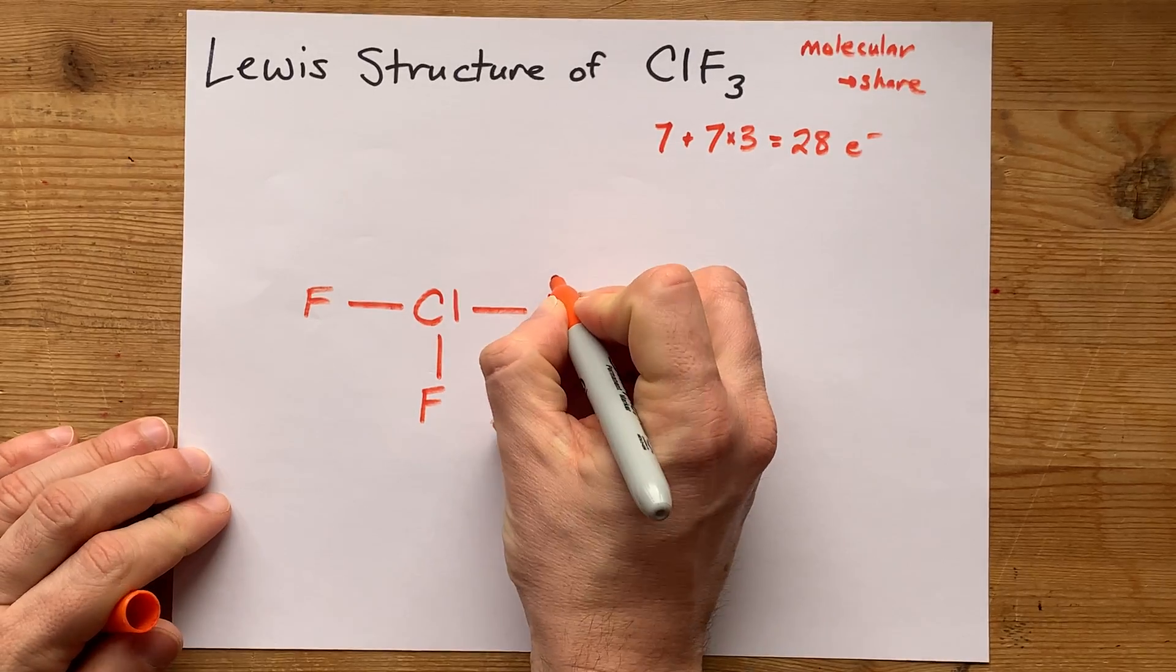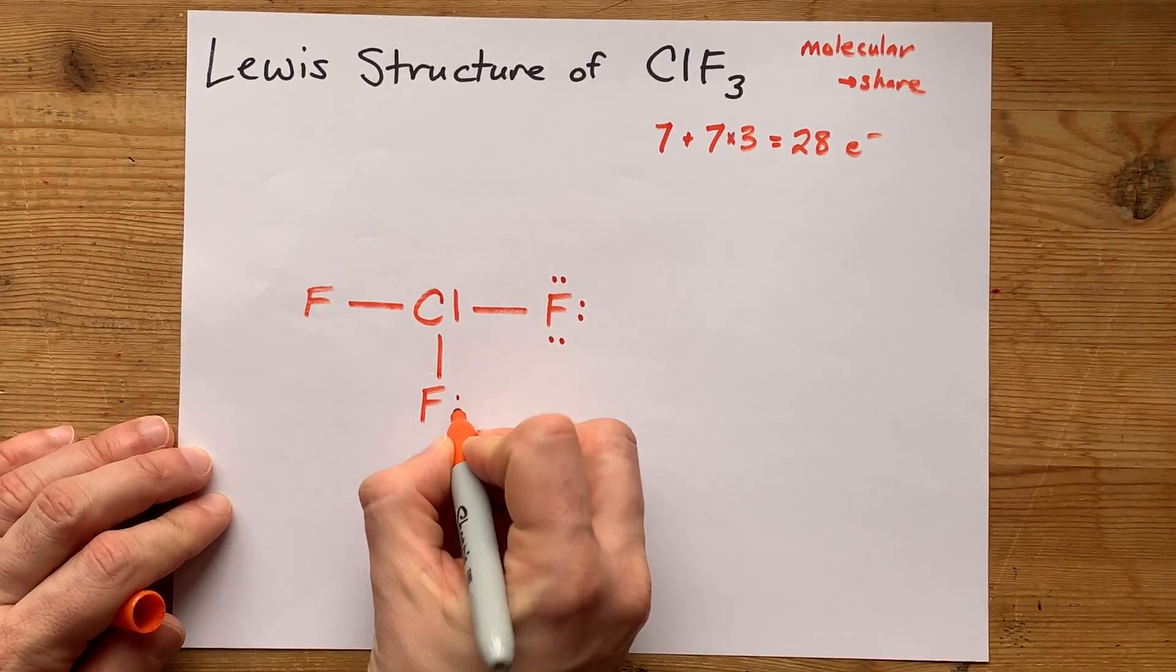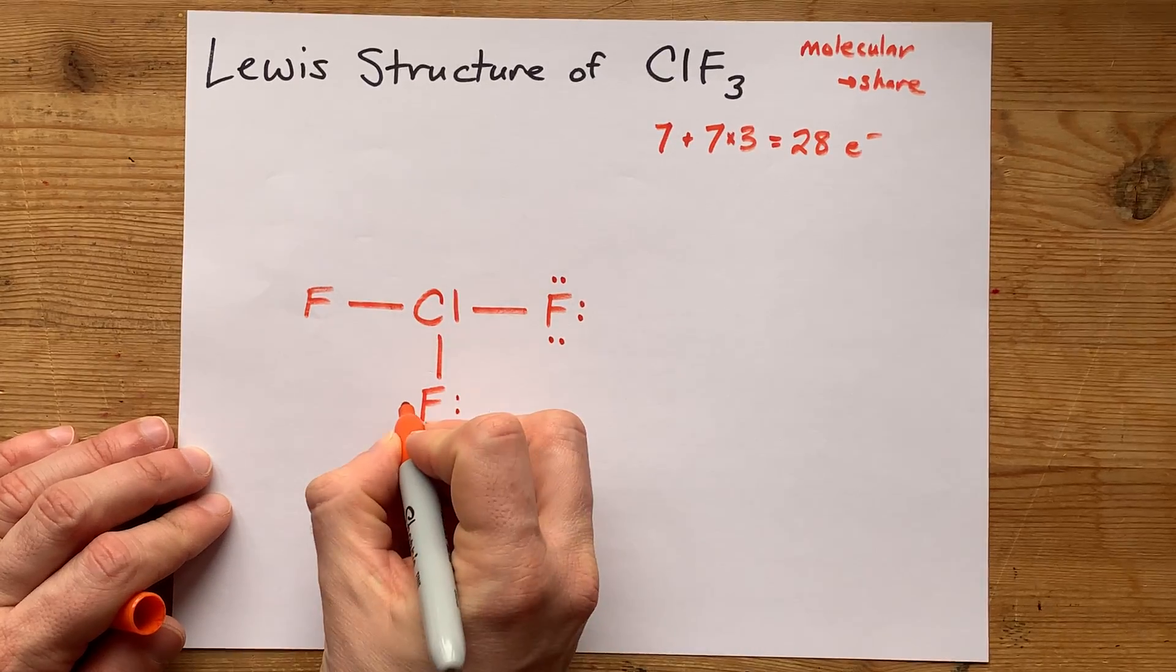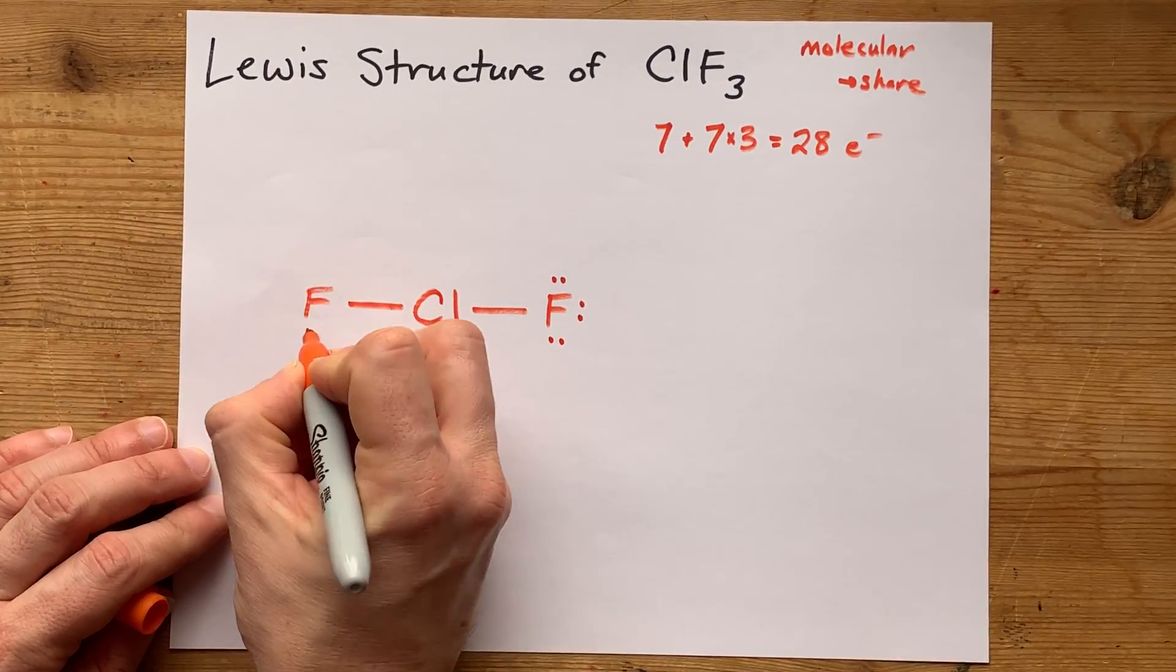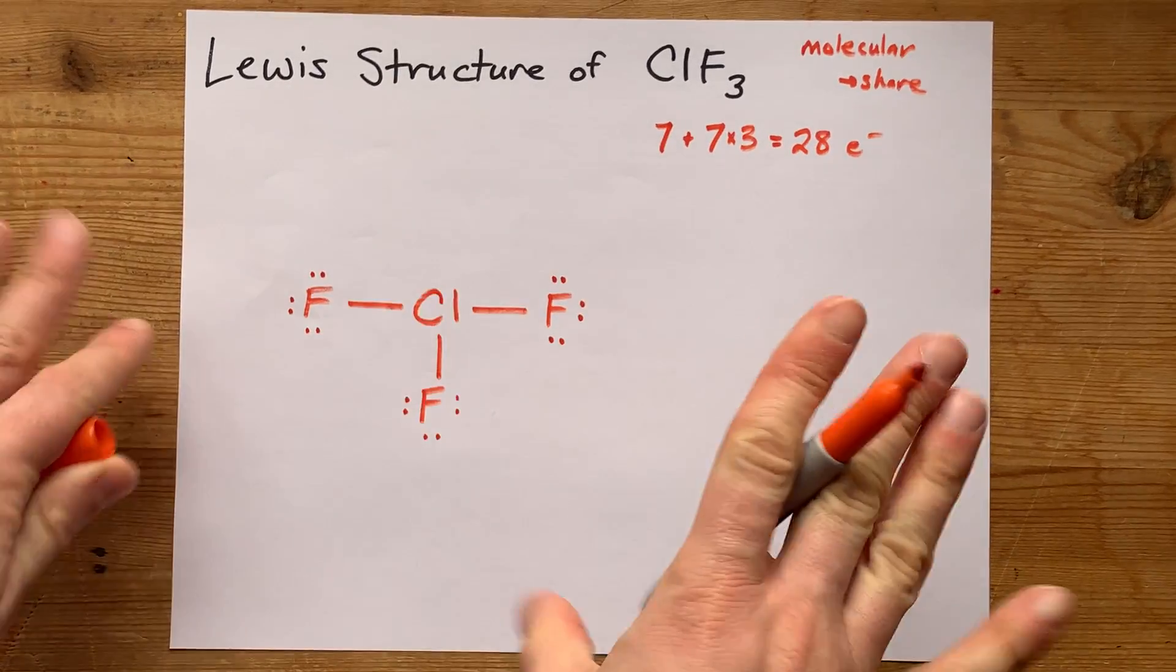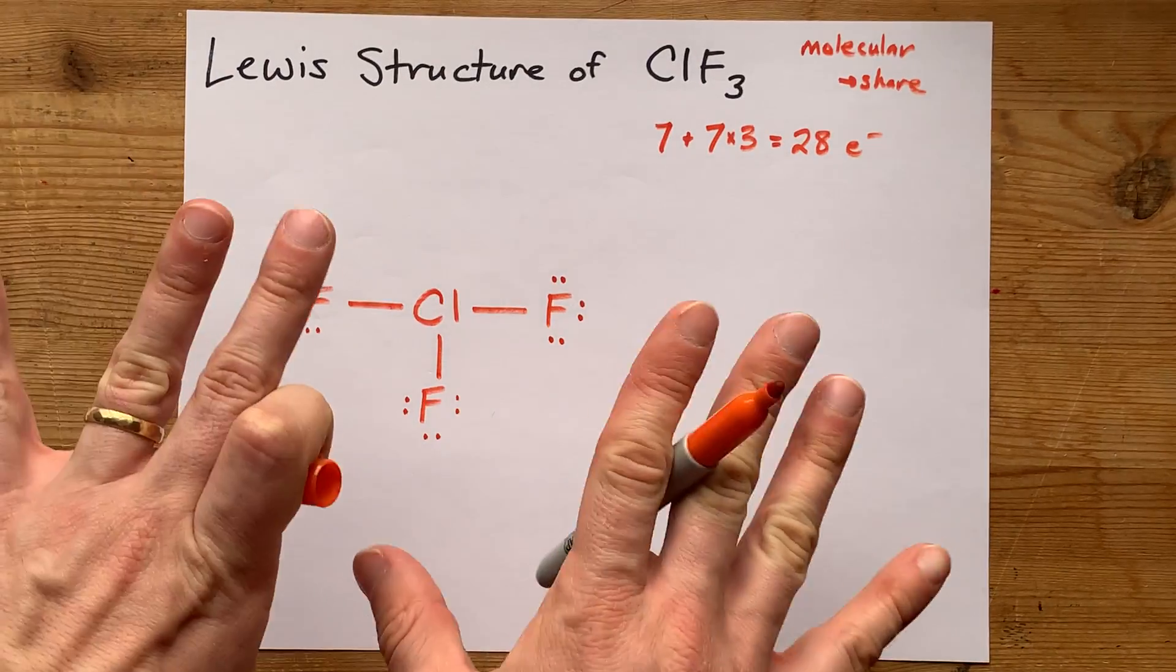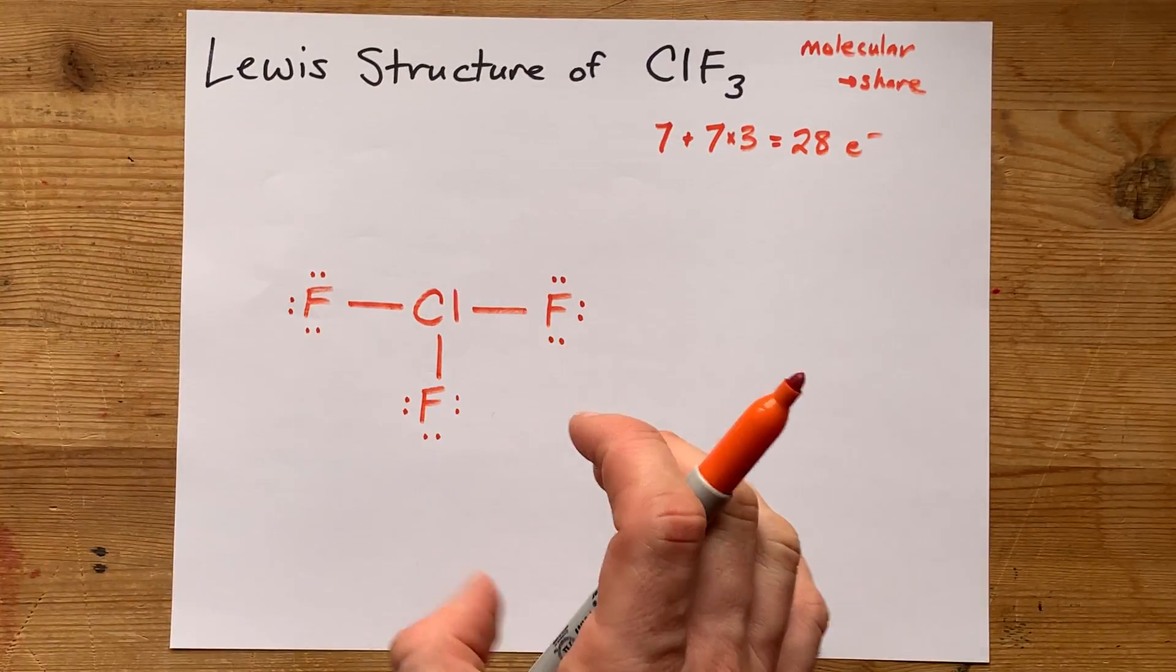So here's 7, 8, 9, 10, 11, 12, 13, 14, 15, 16, 17, 18, 19, 20, 21, 22, 23, 24. My fluorines, or outer atoms, are full. They have a full octet. They're happy. You can't add any more there.